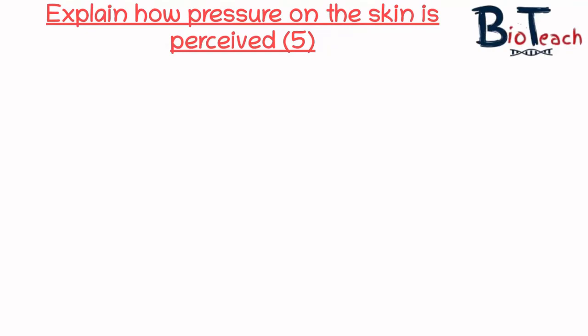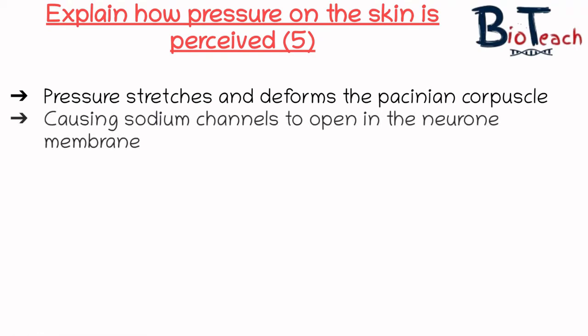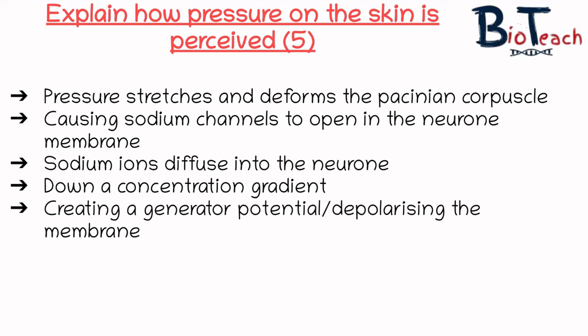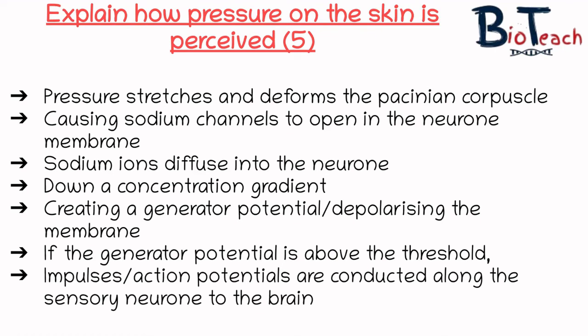Here's a five-marker exam question which would be useful for you to have a go at. The question reads: 'Explain how pressure on the skin is perceived' — five marks. Pause the video now and give that a go. To get the full five marks you would need to talk about: pressure stretching and deforming the Pacinian corpuscle; sodium ion channels opening and sodium moving into the neuron down the concentration gradient; that movement of sodium ions creating the generator potential; and that if the generator potential is above the threshold potential, action potentials will be conducted along the neuron to the brain to cause a response.